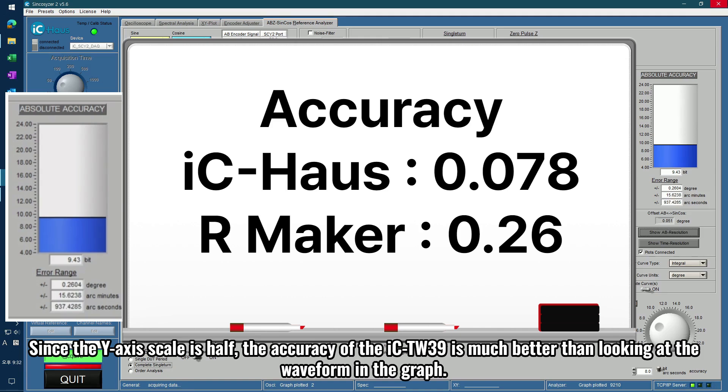Since the y-axis scale is half, the accuracy of the ICTW39 is much better than looking at the waveform in the graph.